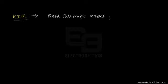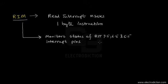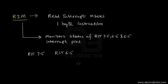Moving ahead, there is another instruction called RIM — Read Interrupt Masks. This is also a one-byte instruction, used to monitor the status of the RST interrupt pins: 7.5, 6.5, and 5.5. For example, if there is an interrupt request on RST 7.5 and simultaneously another on RST 6.5, then 7.5, having higher priority, is dealt with first by the 8085.